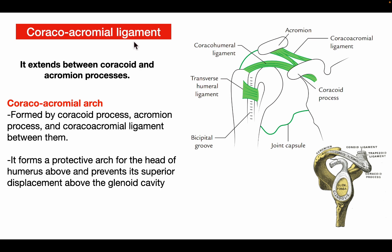The coracoacromial ligament extends between the coracoid process and acromion process. The coracoacromial arch is formed by the coracoid process, acromion process, and the coracoacromial ligament between them. It forms a protective arch for the head of the humerus above and prevents its superior displacement above the glenoid cavity.